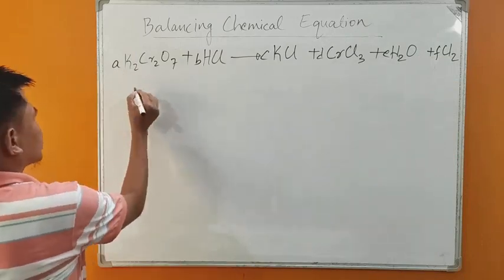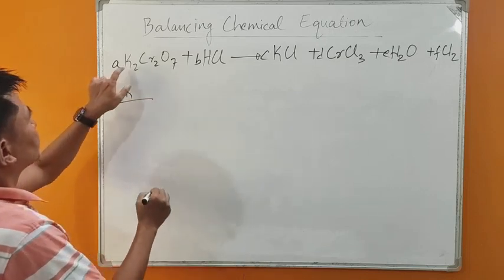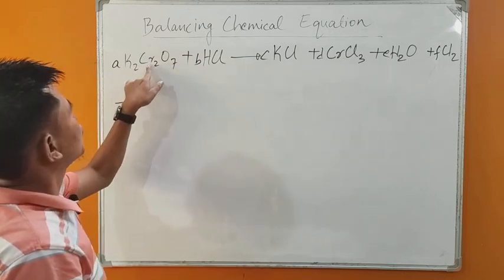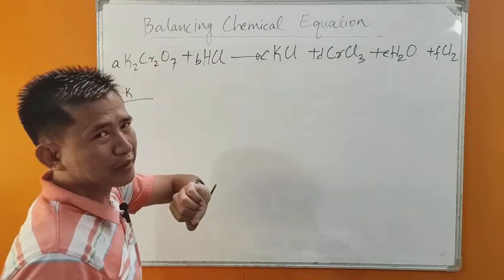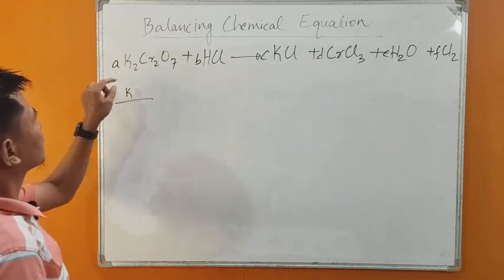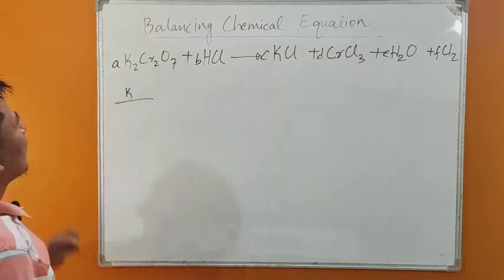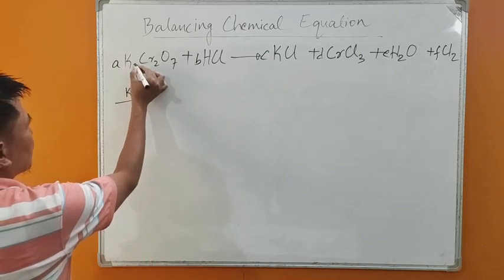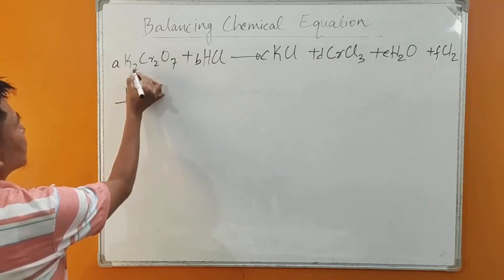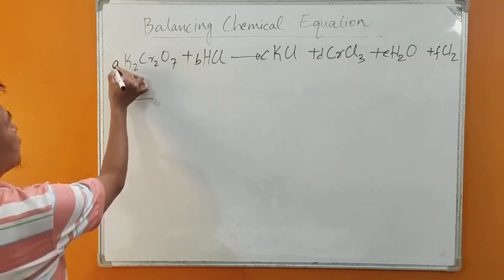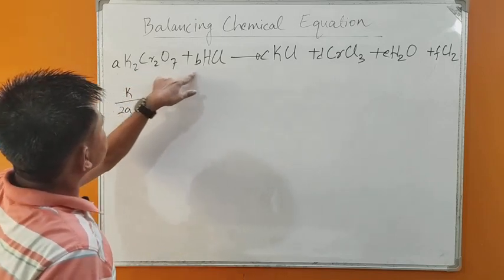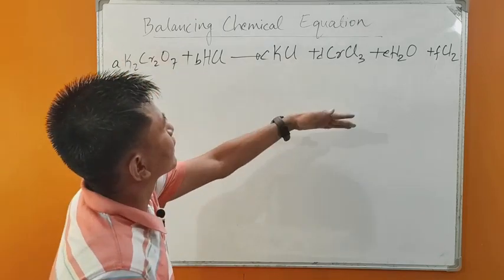The second step: we write K for potassium. We have potassium, chromium, oxygen, hydrogen, and chlorine — five elements reacting. We write each individual element. First, we have potassium here. We see the number of potassium: two. So two into A is 2A. There is no other potassium on the left-hand side, so now we move to the right-hand side. We put an equals sign. We have potassium here on the right-hand side. There is no subscript number below potassium, so we consider one. One into C is C.